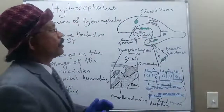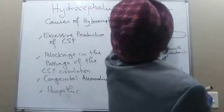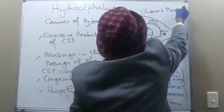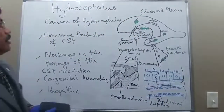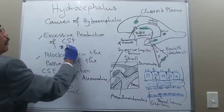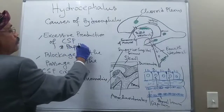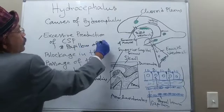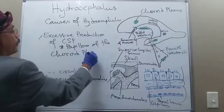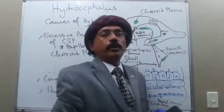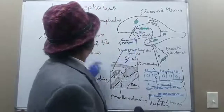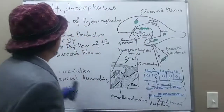The source of excessive CSF production is the choroid plexus. If there is any papilloma — a tumor or neoplasm — of the choroid plexus, it may lead to excessive production of cerebrospinal fluid, especially during infancy or even during intrauterine life.